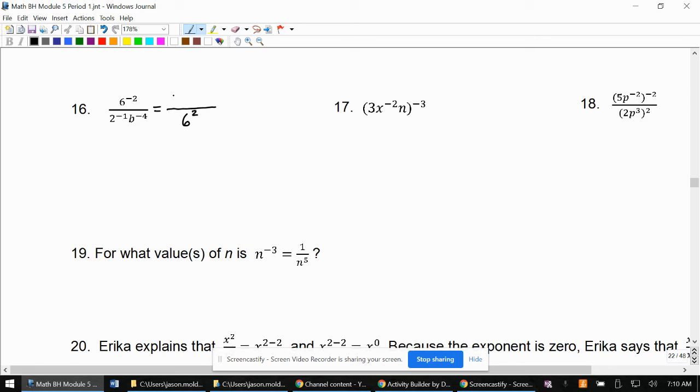2 to the negative first becomes 2 to the first. Cross the line, change the sign. And then b to the negative fourth needs to go in the numerator and become b to the fourth.